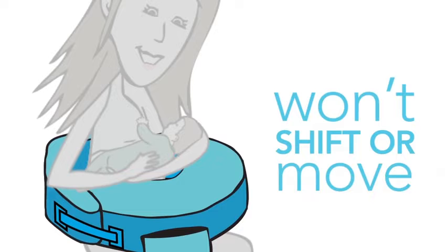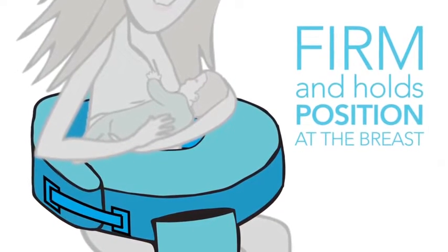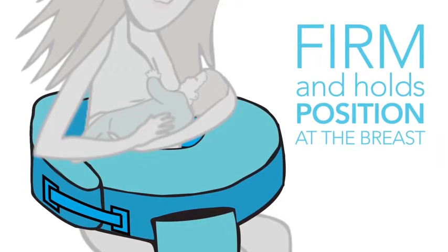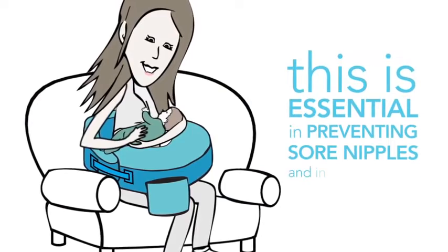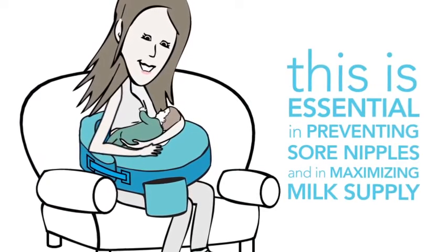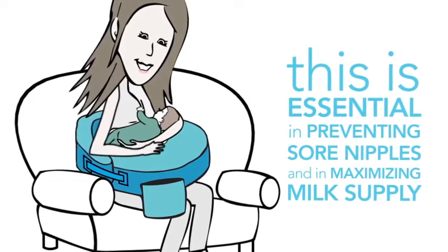Unlike other pillows, it doesn't shift or move. The My Breast Friend is firm and holds its position at the breast, facilitating proper latch and positioning. This is essential in preventing sore nipples and maximizing milk supply, the two most common reasons moms will stop breastfeeding too early.